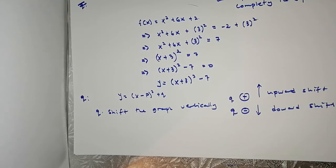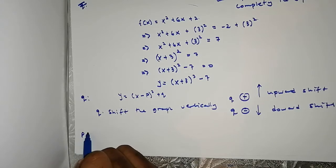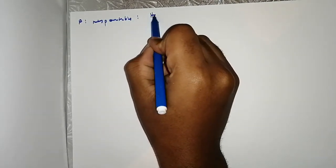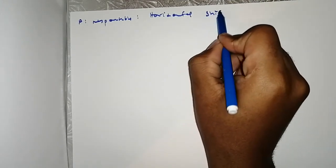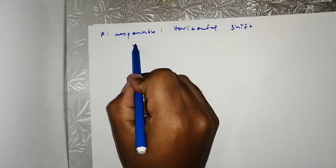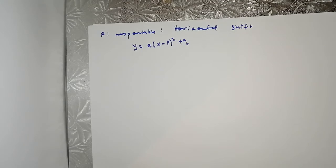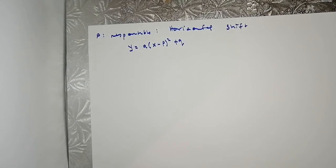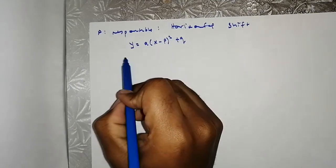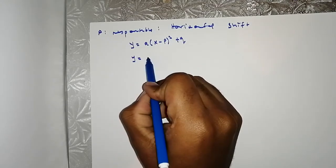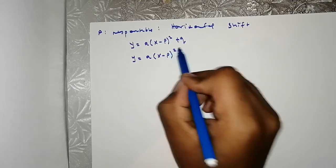Now I'll introduce what p means, and what p and q together mean entirely. p is responsible for the horizontal shift of the graph. Let's be careful about exactly what happens — in y = a(x - p)² + q, the direction of p's shift can be confusing because it has an opposite effect to what you might expect.